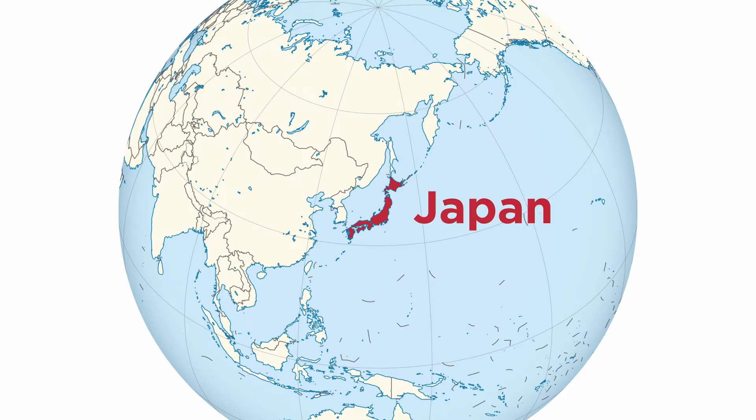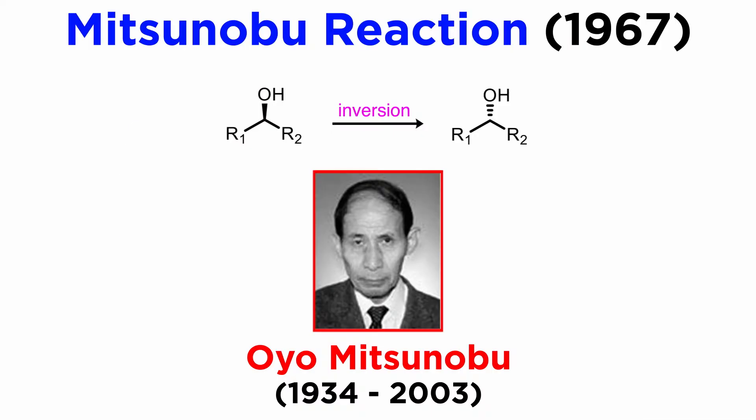For today's organic chemistry name reaction, we travel to Japan. The first direct inversion of secondary alcohols was described by Japanese chemist Oyo Mitsunobu in 1967, and it has become one of the most used reactions of the 21st century.